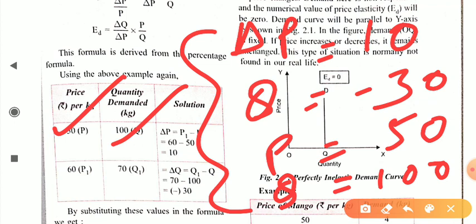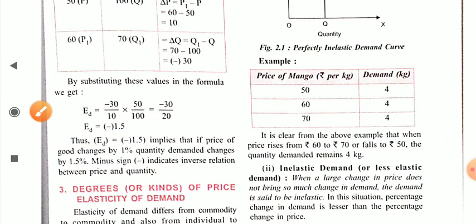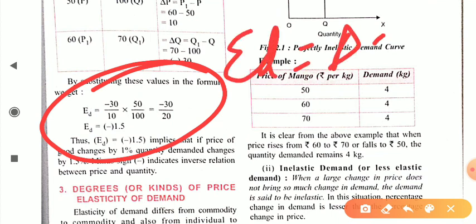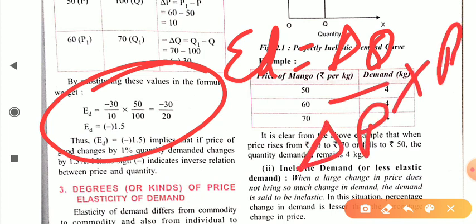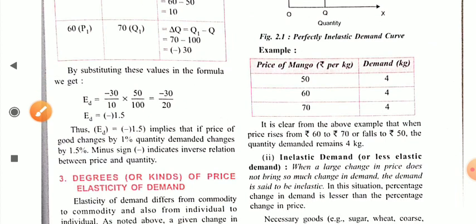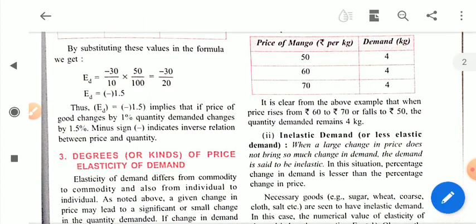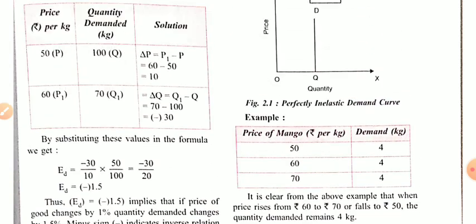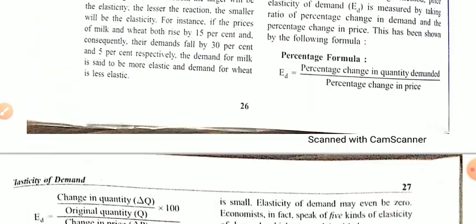Putting these values into the formula: E.D. = (delta Q / delta P) × (P / Q) = (−30 / 10) × (50 / 100) = −1.5. Thus E.D. = −1.5 implies that if price of the good changes by 1%, quantity demanded changes by 1.5%. The minus sign indicates the inverse relationship between price and quantity demanded. This is our percentage method of measuring elasticity of demand.